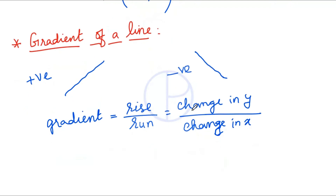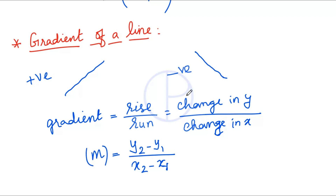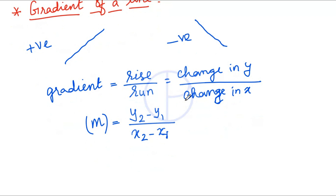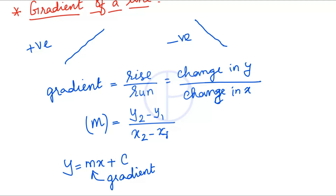Given two points (x1, y1) and (x2, y2), the gradient formula is: m = (y2 − y1) / (x2 − x1). In the general equation of a line, y = mx + c, the m represents the gradient.